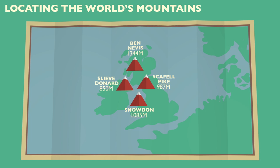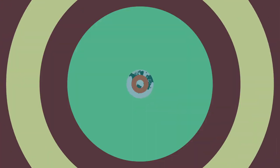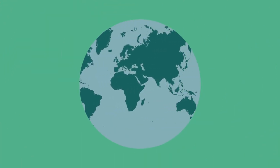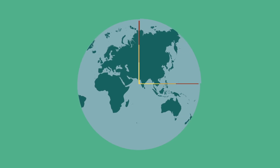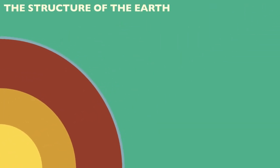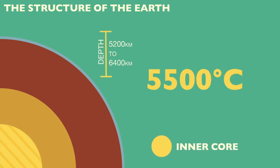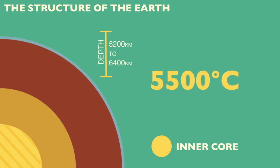We know where the significant mountains are located, but the question remains: how exactly are they formed? To understand how mountains are formed, we first need to take a closer look at the structure of the Earth. The Earth comprises four main layers. The inner core is a solid ball of iron with a temperature of 5,500 degrees Celsius — almost as hot